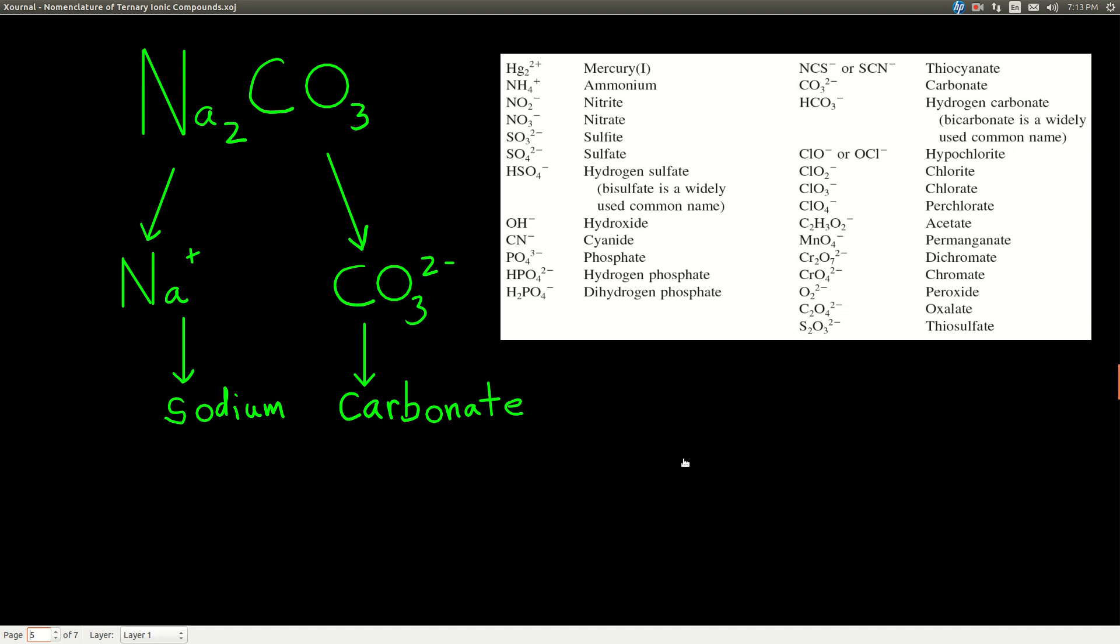So naming ternary ionic compounds. To name this compound right here, the first thing we do is recognize that sodium is a metal. Carbon and oxygen are nonmetals. So it's going to be an ionic compound. There's more than two elements, so that means it's a ternary ionic compound. Once you realize it's a ternary ionic compound, you know there's going to be at least one polyatomic ion in there. Look for it. Find it.